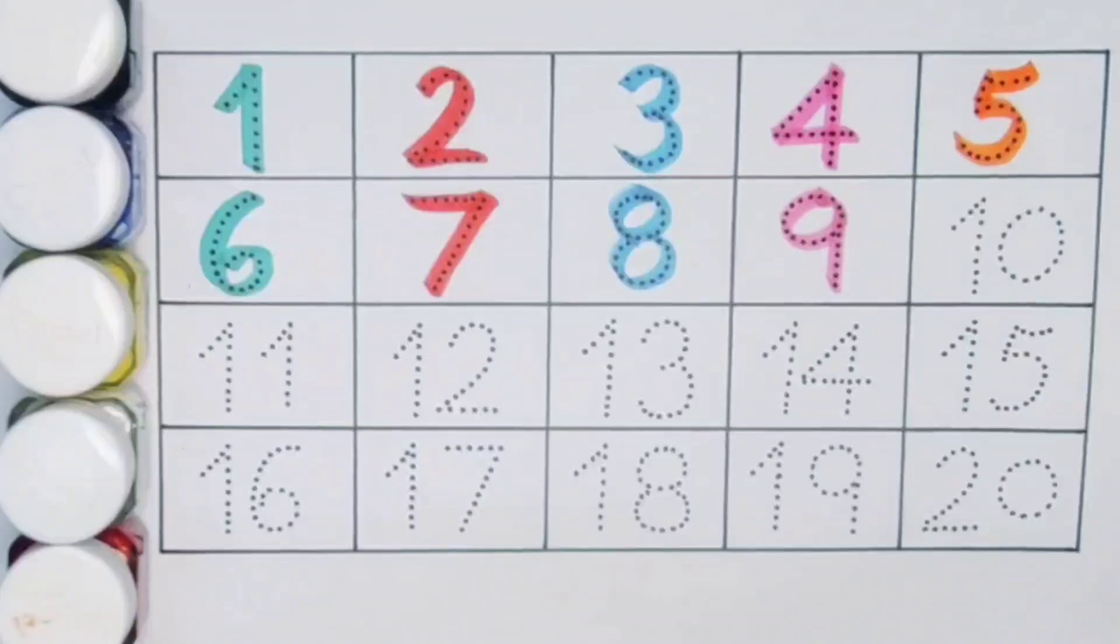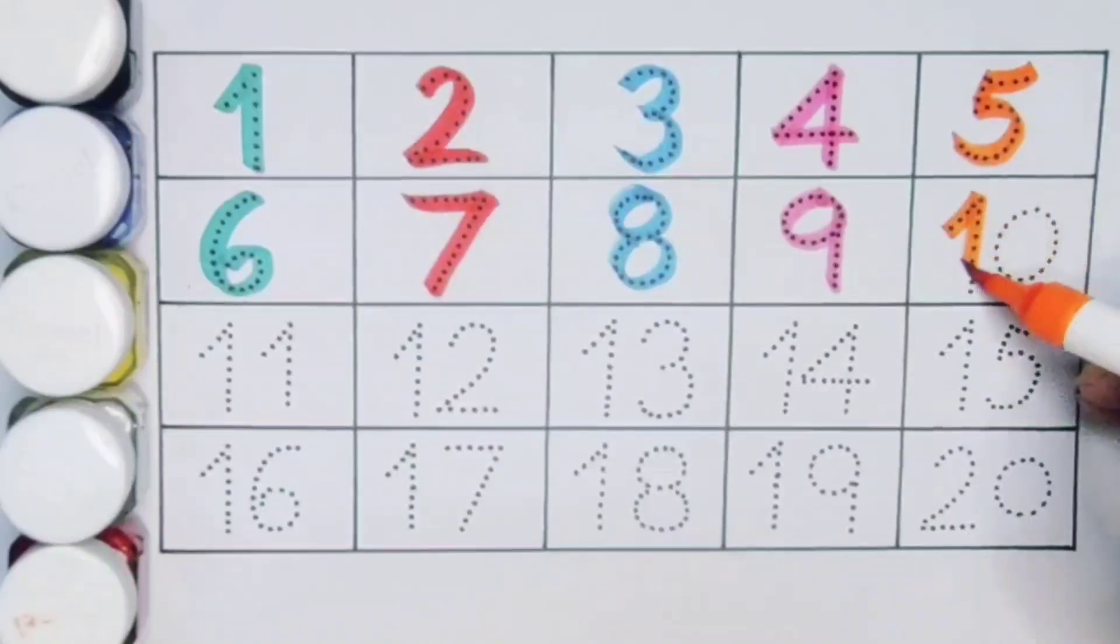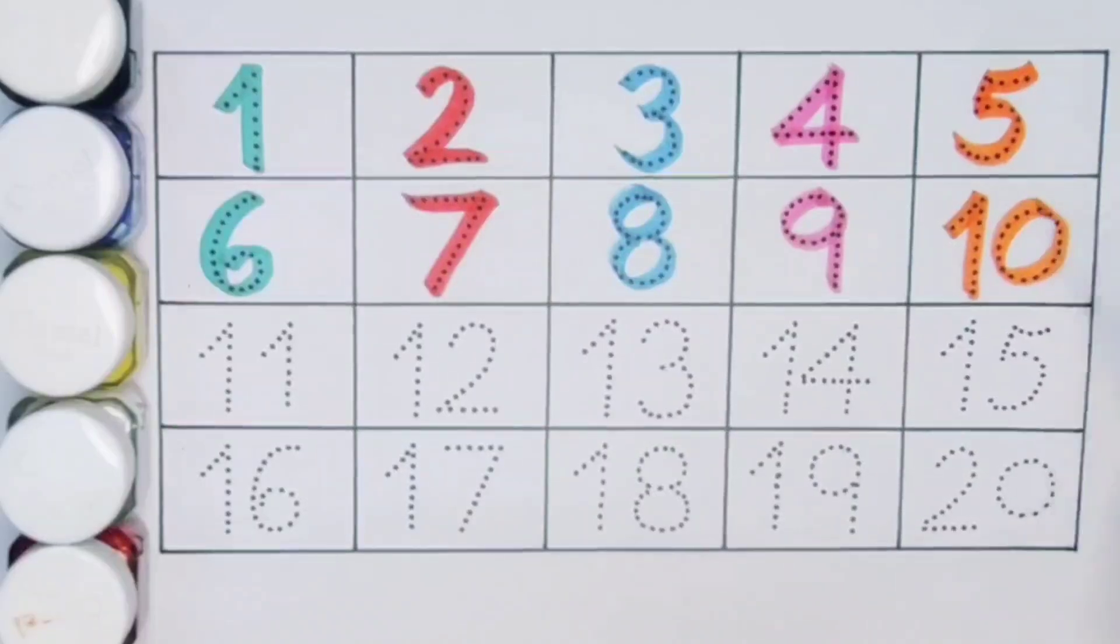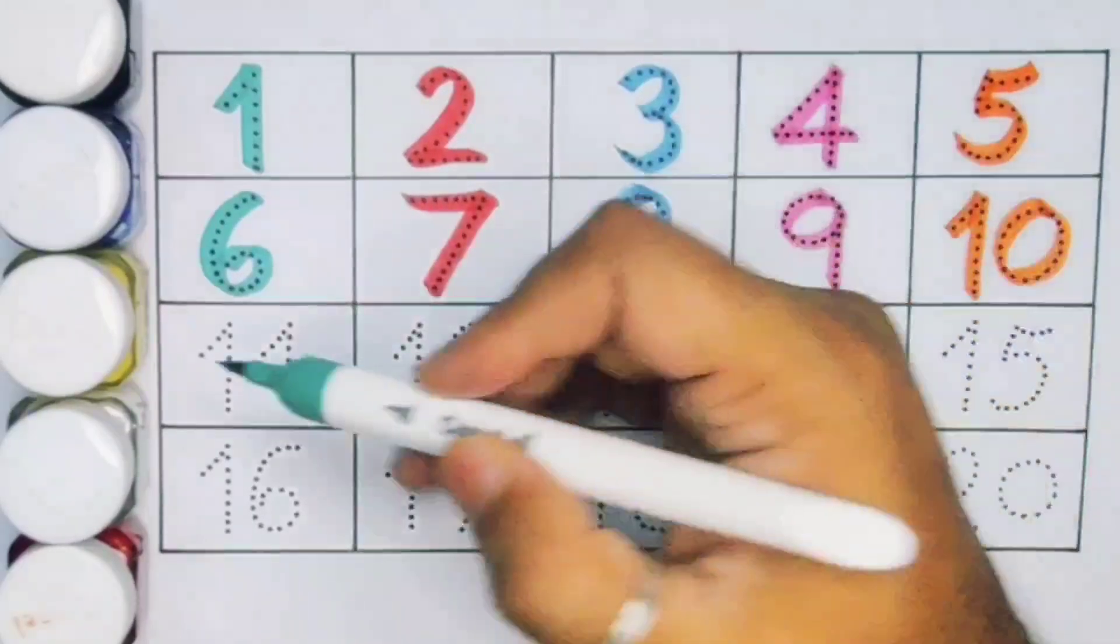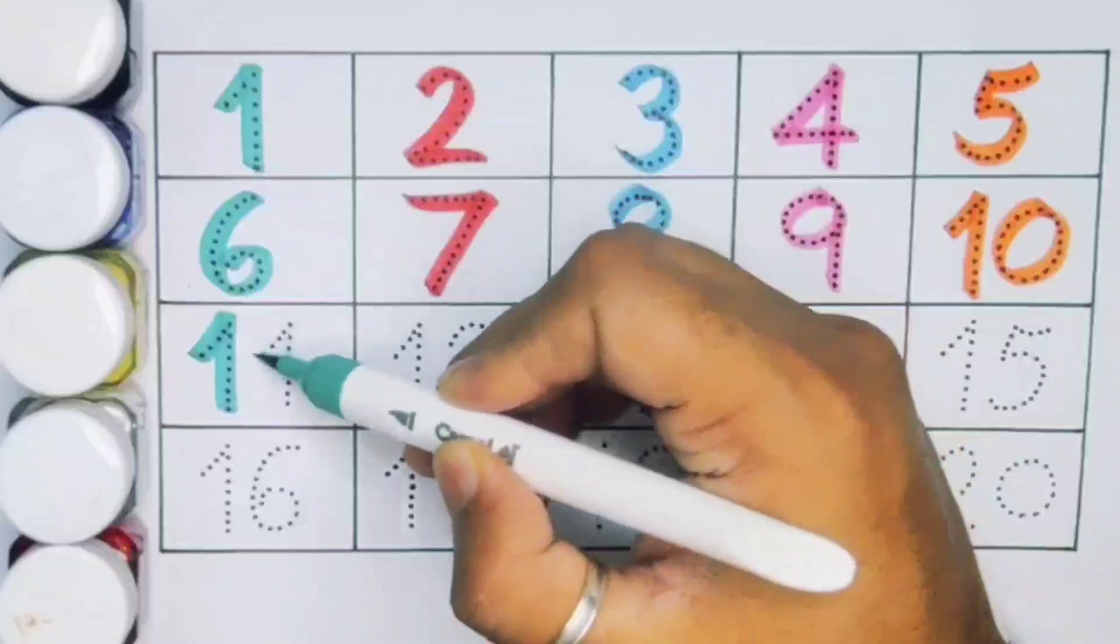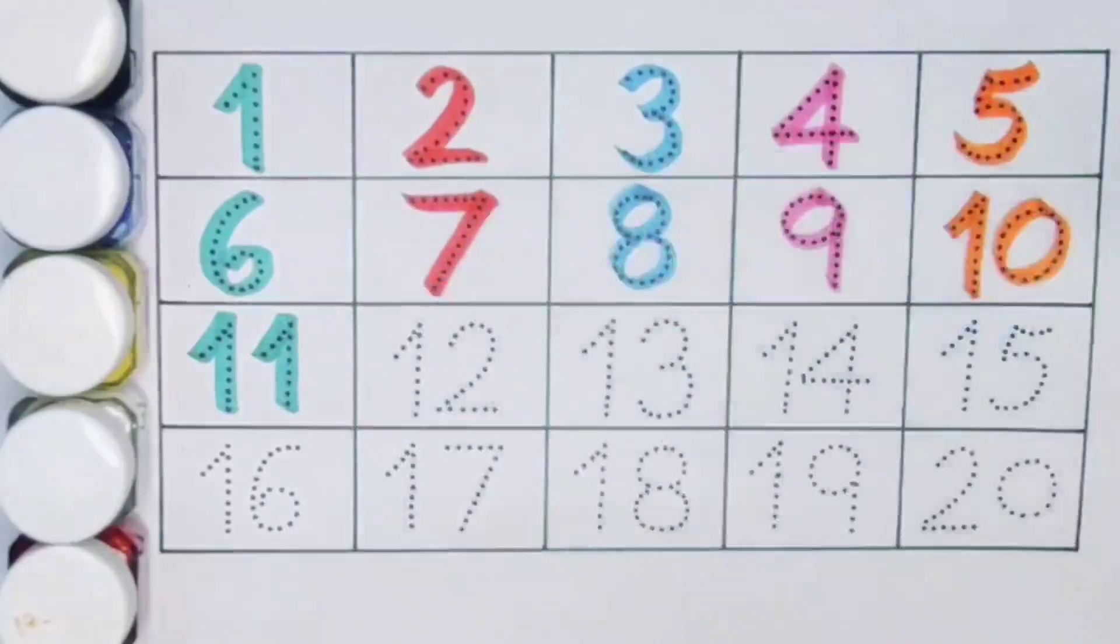Next kids 10, 1, 0, 10. Number 10. Next kids 11, 1, 1, 11. Number 11.